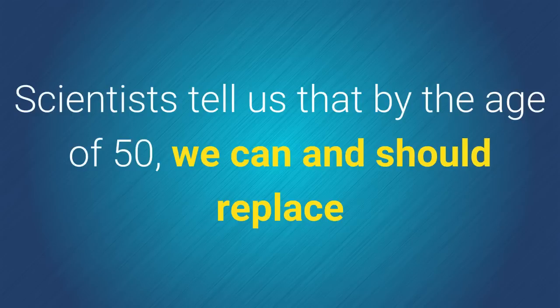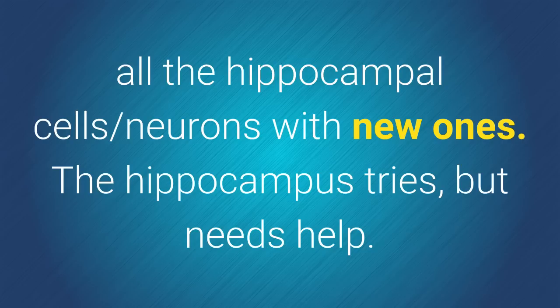Scientists tell us that by the age of 50 we can and should replace all the hippocampal cells or neurons with new ones. The brain tries but is often unable to pull it off without help. The hippocampus tries to make new cells but needs our help.